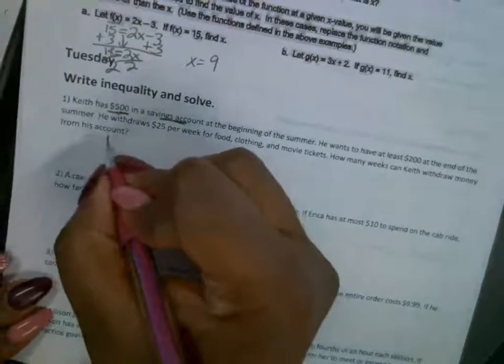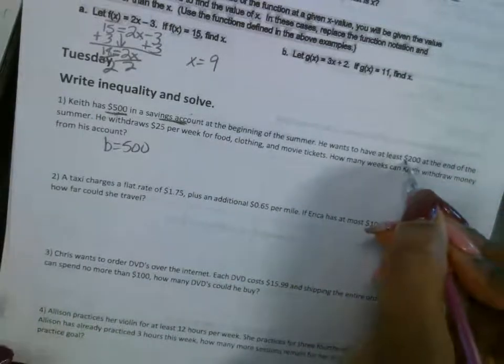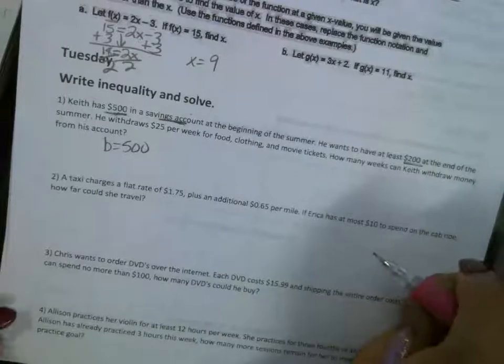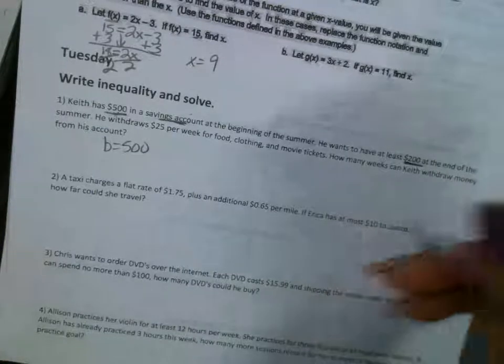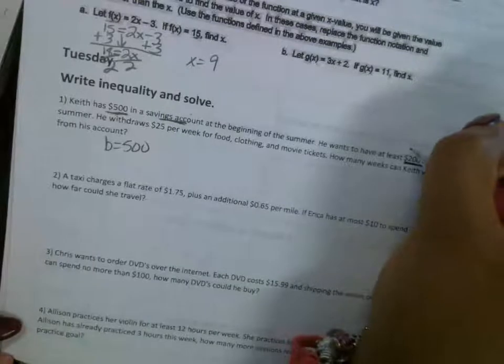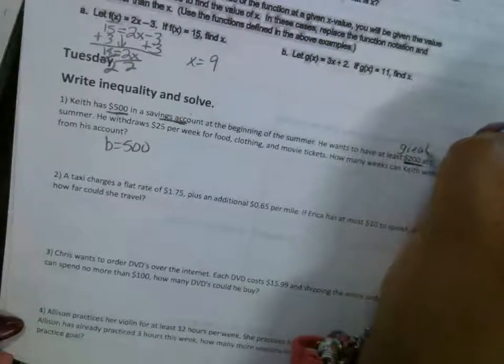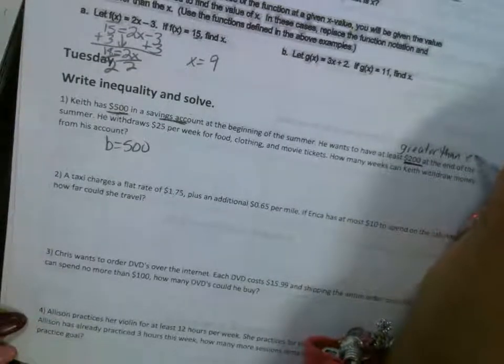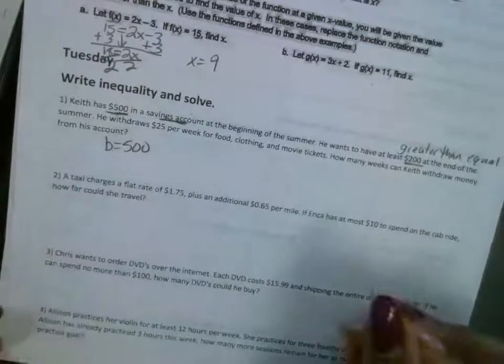All right, so we got b, it's $500. He wants to save at least, so when you say he wants to save at least $200, that means that he wants $200 or more. So this is either equal to or greater than. So greater than or equal to, $200 at the end of the summer.